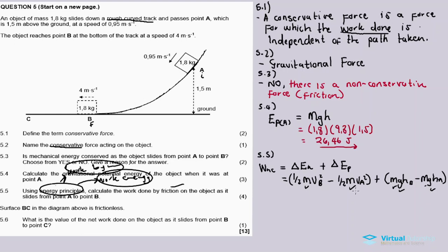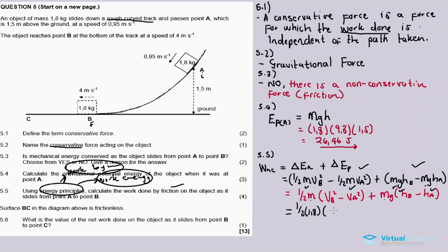To make life easier during an exam, you can take out the common factor - take out the common factor for the first bracket as well as a common factor from the second bracket. So instead of substituting m multiple times, substitute m once. In this calculation: half times 1.8, then v_B is 4 so it's 4 squared, minus v_A is 0.95, so it's 0.95 squared, close bracket.